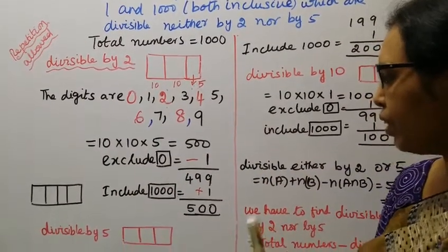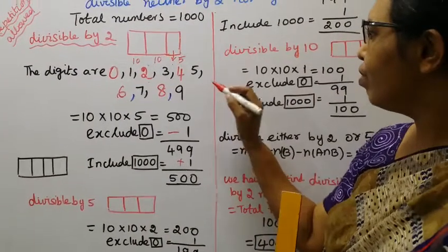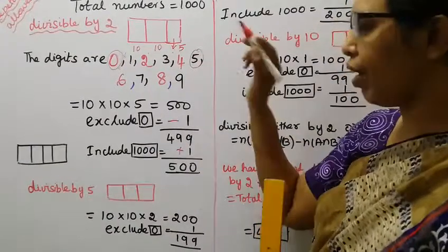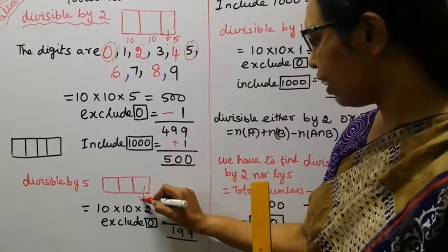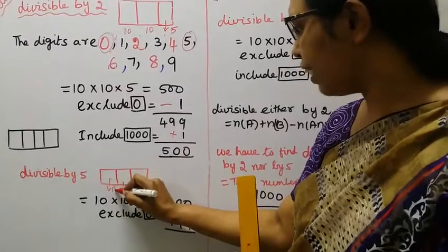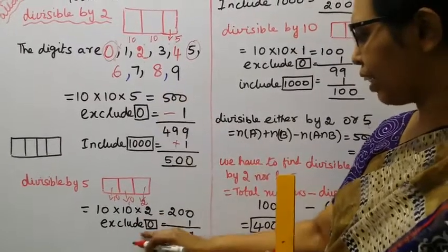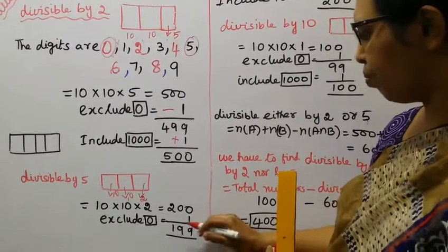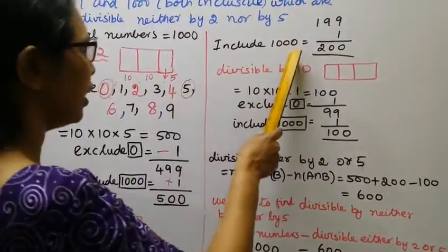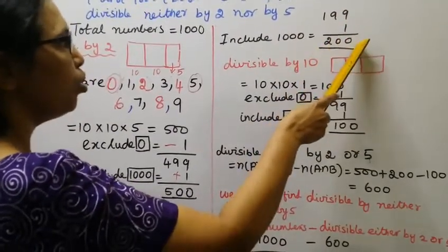Divisible by 5. Ending number zero, five. 10 into 10 into 2, that is equal to 200. Exclude zero, minus one. 200 minus one, 199. Include thousand, 199 plus one, 200.